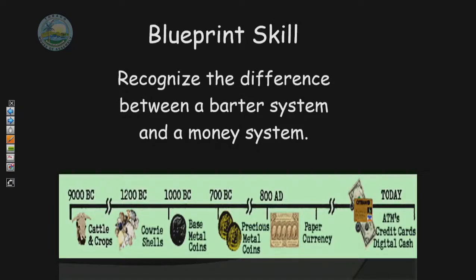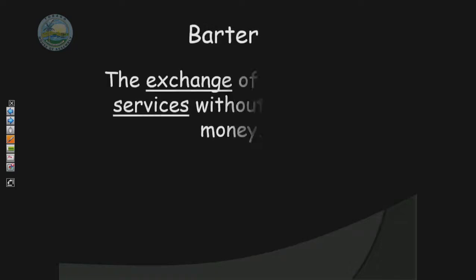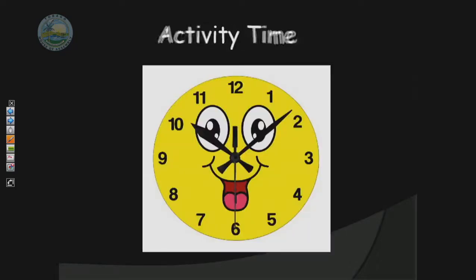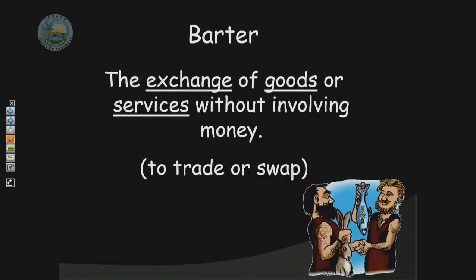So we are going to look at what barter is. In the video we heard 'this for that,' so let's put that into perspective. Barter is the exchange of goods and services without the use of money. There are three important elements: exchange — another term could be swap or trade — then goods, which are something tangible you can feel or touch, and services, which are intangible.